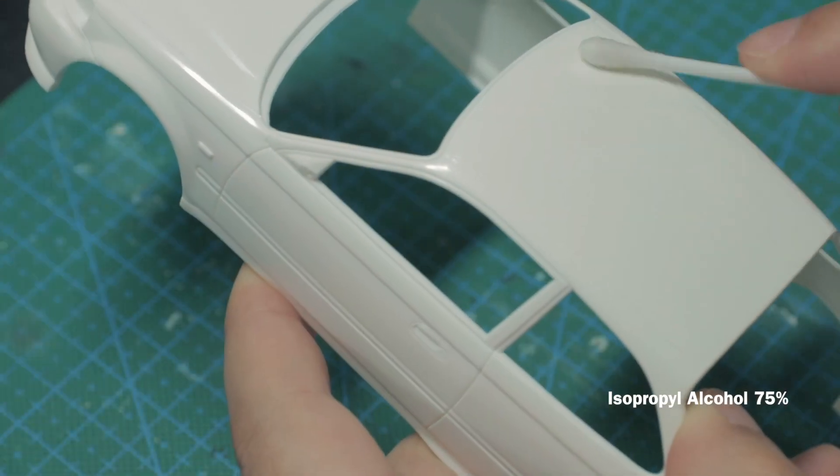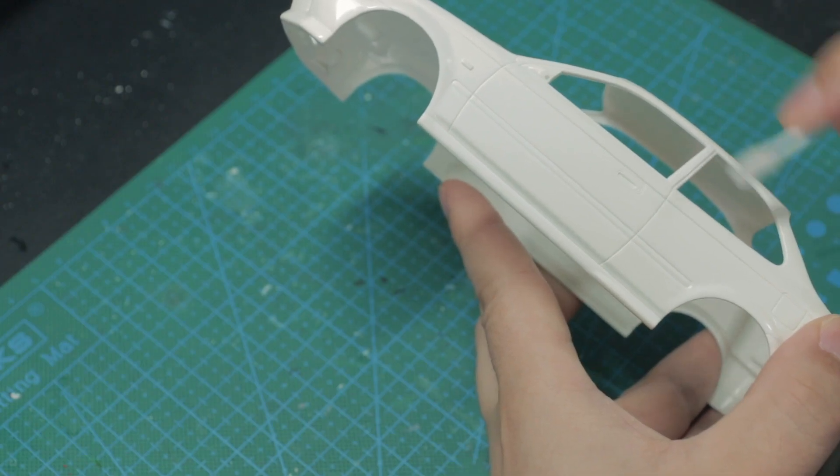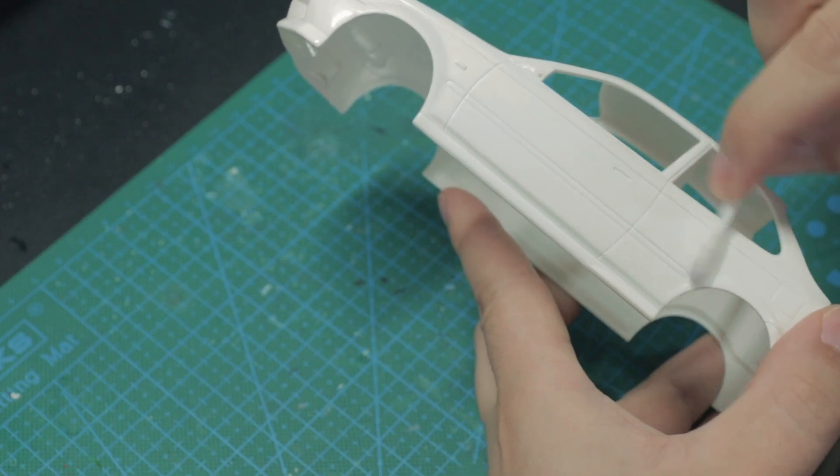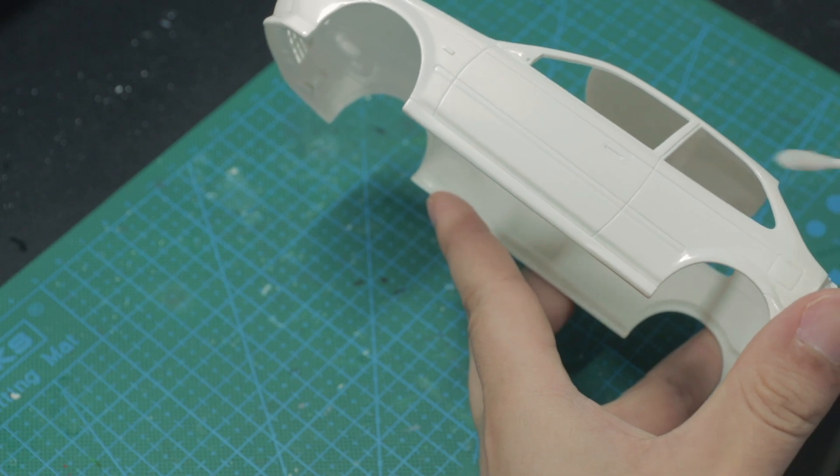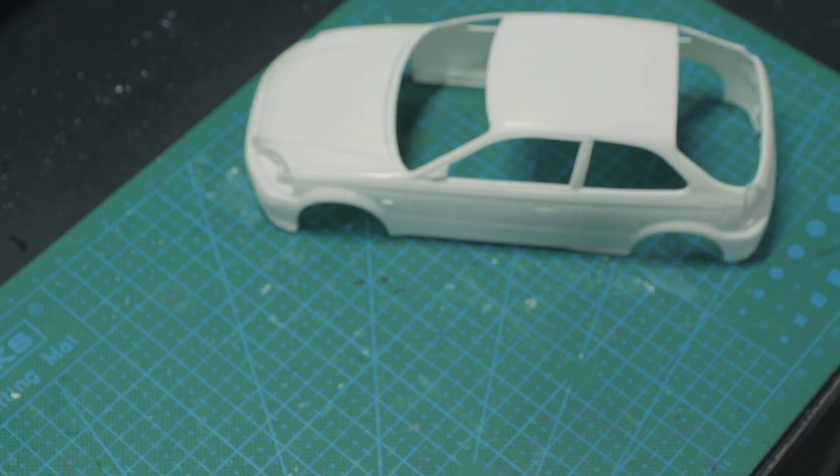One final thing to do before painting is to wipe it clean with some rubbing alcohol. So that's it for part 1. I will be painting this car in part 2, so don't forget to subscribe if you haven't. You're welcome to check out my other videos on my channel as well. I will see you guys in part 2.